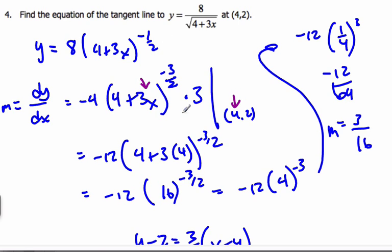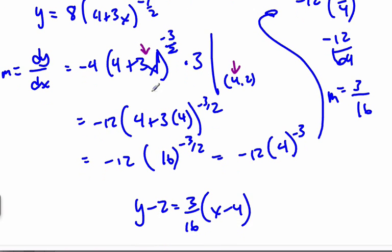Use the chain rule to find the slope. Plug in my x value to find the specific slope at that point. And I get my tangent.